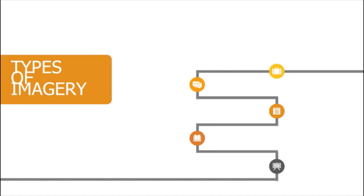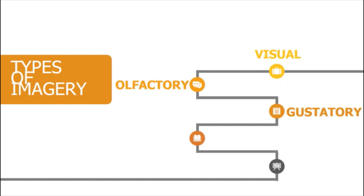Visual and auditory imagery are just two of the five forms of imagery. What are the five types of imagery in literature? We have visual, olfactory, gustatory, tactile, and auditory. Get ready to take your senses for a ride through each one of these five forms of imagery. Let's discuss them one by one.